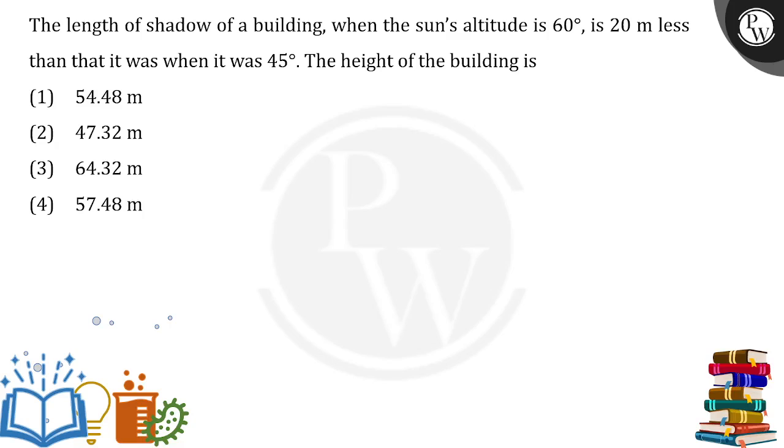It says that the length of the shadow of the building when the sun altitude is 60 degrees is 20 meters less than when it was 45 degrees.